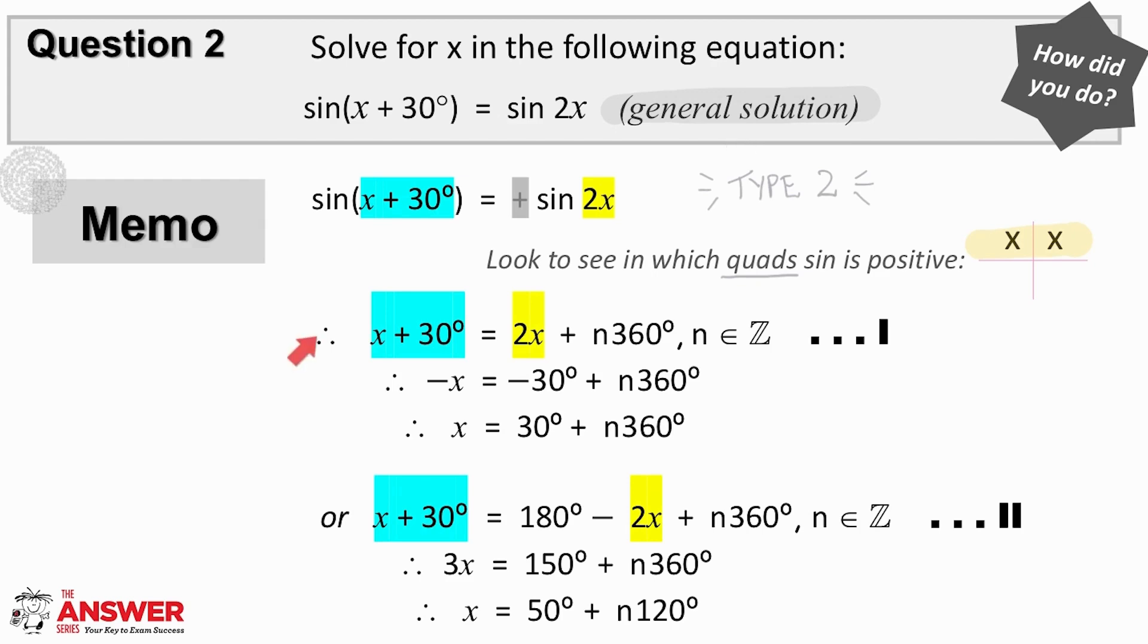This means each of these solutions recurs every 360 degrees, and so we add n360 in each case. In n360, it is really important that n is an integer, because this equation is only true if a full 360 degrees is added or subtracted each time.